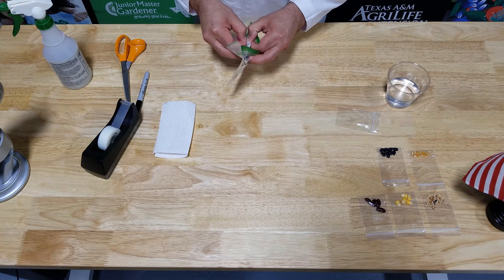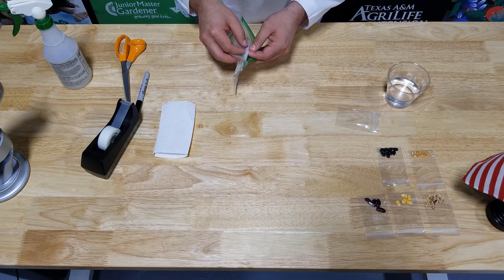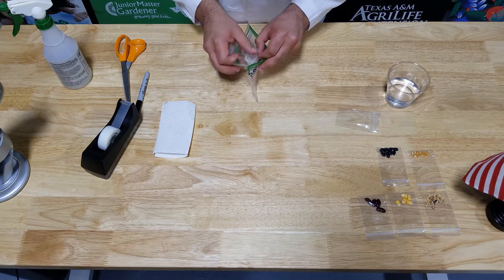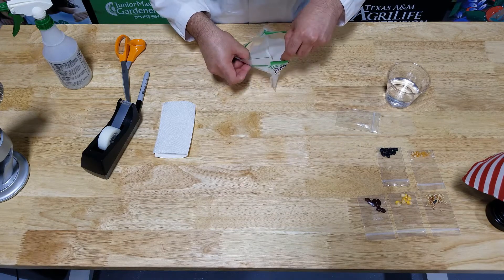It might be a little difficult when our paper towel is this wet, but there we go. Peel it back and we can kind of see what our seeds look like.